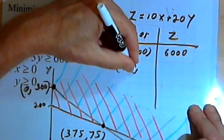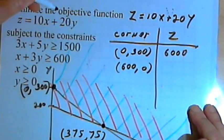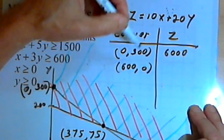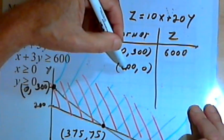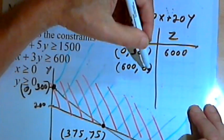So x is 600, y is 0. I want 10 times 600, which is 6,000. And 20 times 0 is 0. So once again I get 6,000.